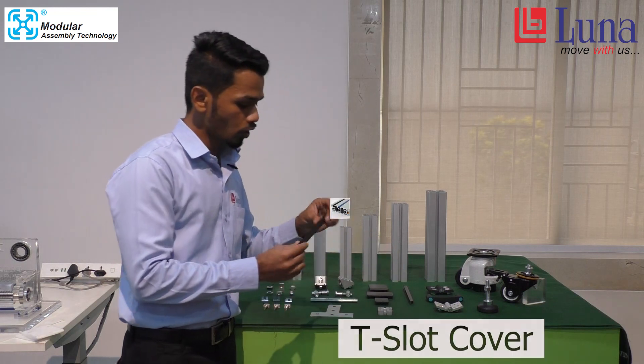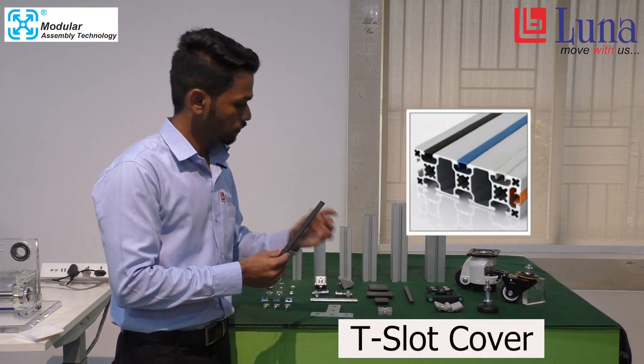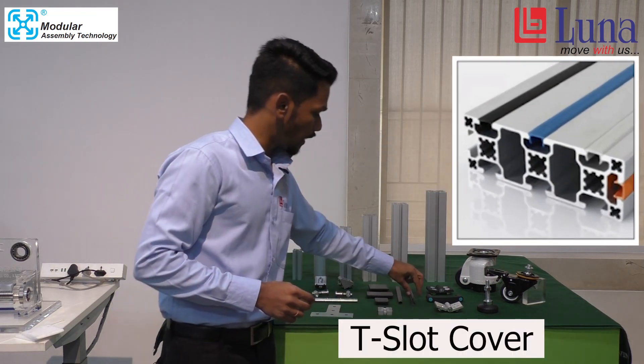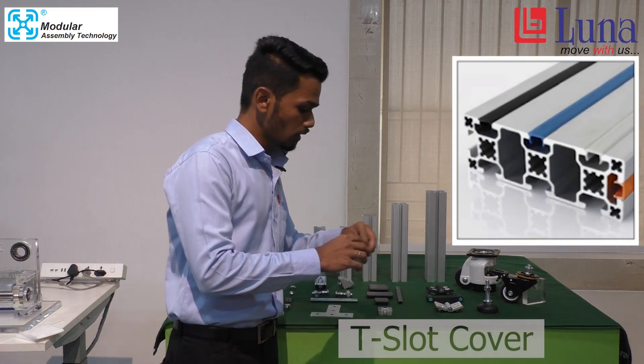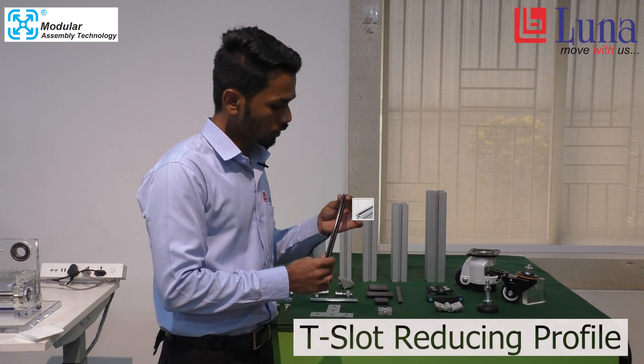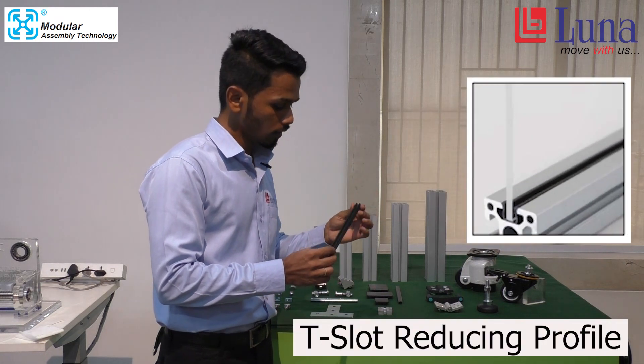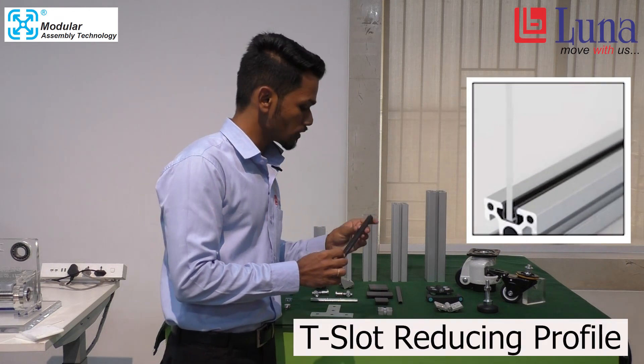In profile accessories, we have end caps and T-slot covers. In panel insulation elements, we have the T-slot reducing profile, which is used for inserting acrylic sheet or glass.